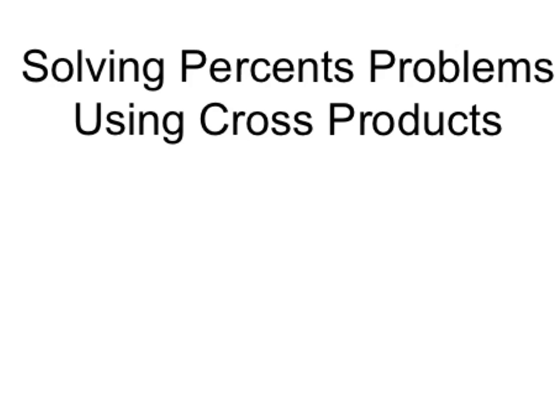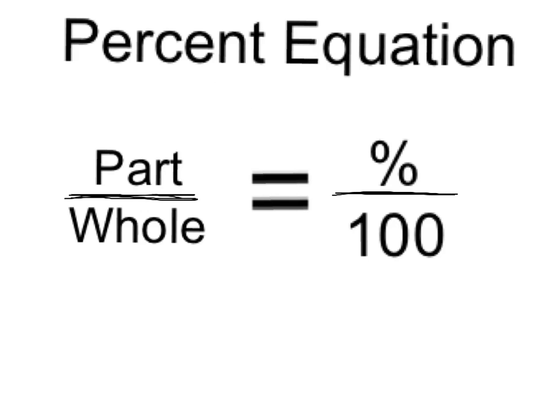Today we're going to use what we know about solving using cross products to solve some percent problems that we might already know how to solve in other ways. Now that we know how to solve proportions using cross products, this is an equation you might see very often. You might hear it as 'is over of equals percent over 100,' but I like to use part over whole — meaning the piece over everything — equals the percent over 100. You'll always see the percent over 100 because percent means part of 100.